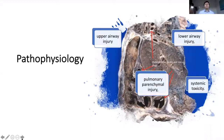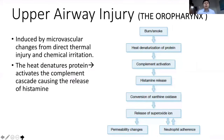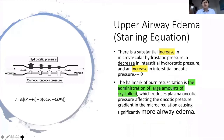Upper airway injury affects the oropharynx, and the end result is edema. It is induced by microvascular changes from direct thermal injury and chemical irritation — including denaturation of protein, activation of complement, release of histamine and superoxide ions — resulting in upper airway edema. The thermal effect on mucosa and blood vessels leads to increased microvascular hydrostatic pressure, decreased interstitial hydrostatic pressure, and increased interstitial oncotic pressure. When large amounts of crystalloid are given in primary resuscitation, plasma oncotic pressure is reduced, resulting in significant airway edema.